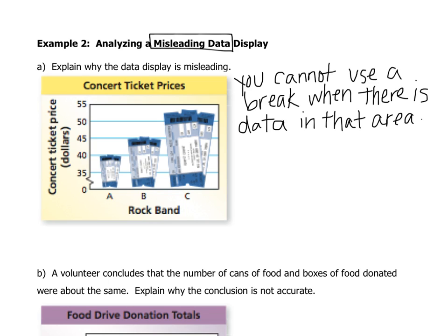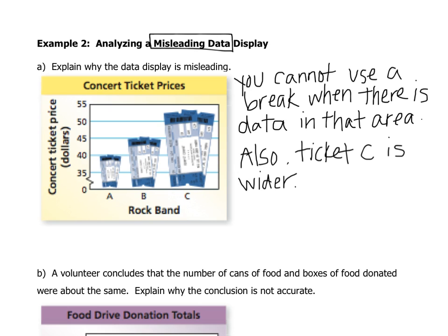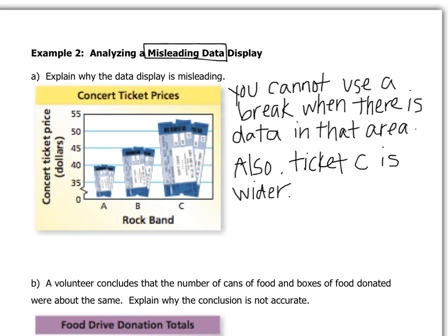Another thing that makes the graph misleading is that Rock Band C's ticket suddenly got significantly wider and taller, but the proportion is not the same as the other bars. Even though you are smart enough to realize it, your brain gets tricked into thinking that Rock Band C got significantly more tickets sold or that their ticket price was a lot higher, because their ticket is larger — even though it was only a difference of what looks like maybe $12. Ticket C is also wider, which makes it misleading.